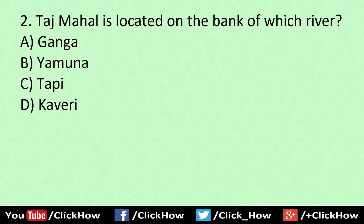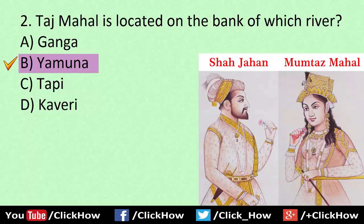Taj Mahal is located on the bank of which river? Answer is B, Yamuna. Another related GK question: Taj Mahal was built by Mughal Emperor Shah Jahan in memory of his favorite wife Mumtaz Mahal.